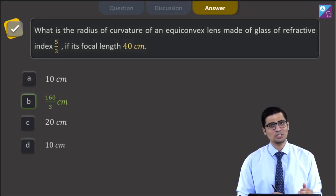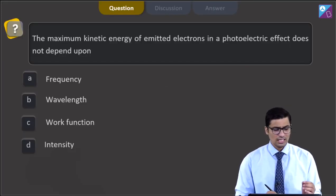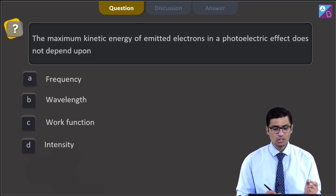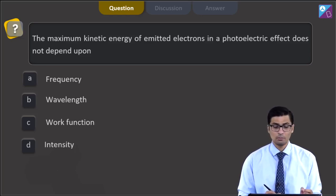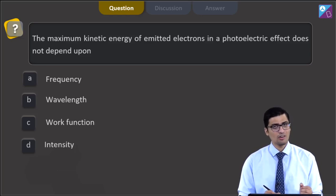Now let us proceed to the next question. This is question 47. The question states, the maximum kinetic energy of emitted electrons in a photoelectric effect does not depend upon frequency, wavelength, work function or intensity.